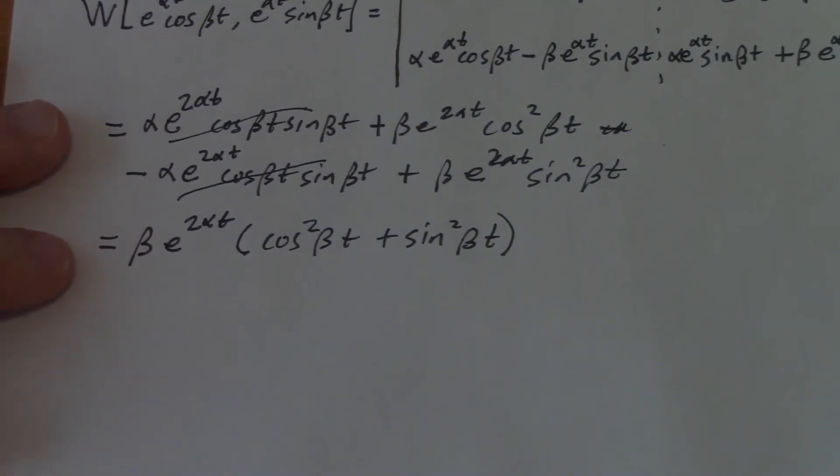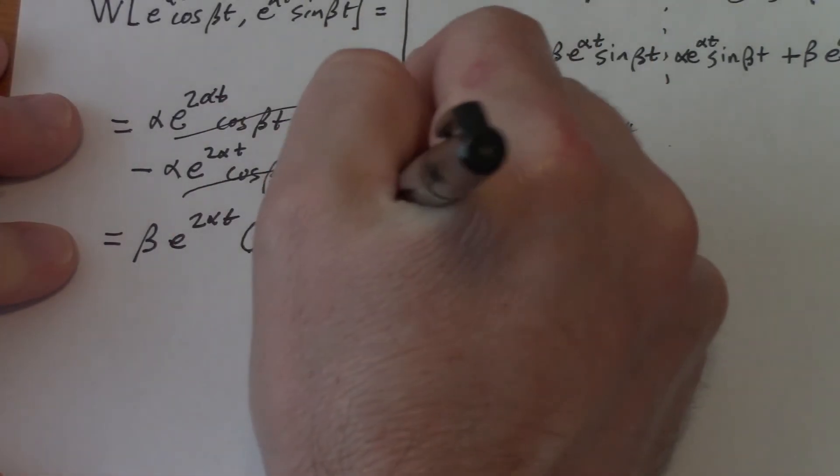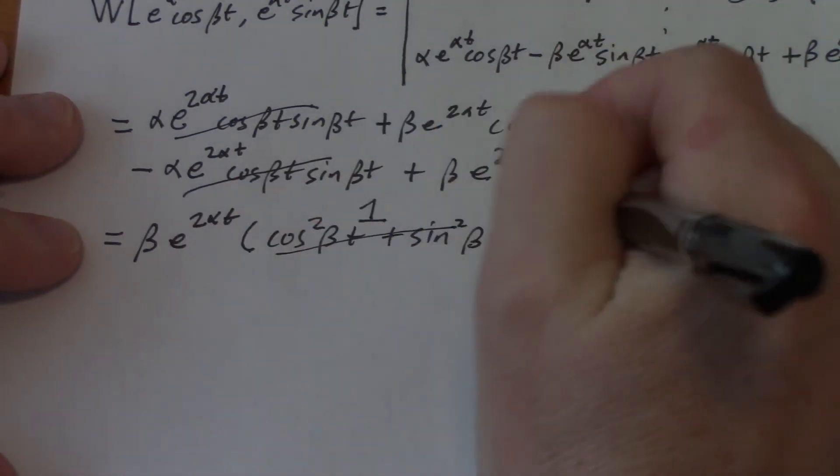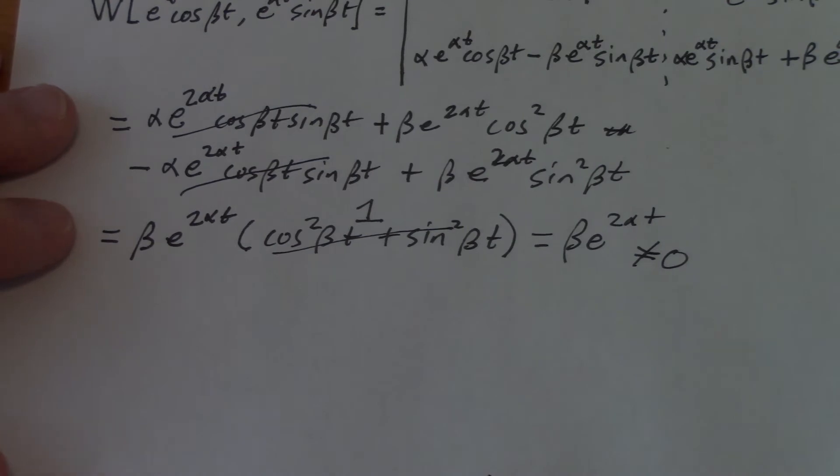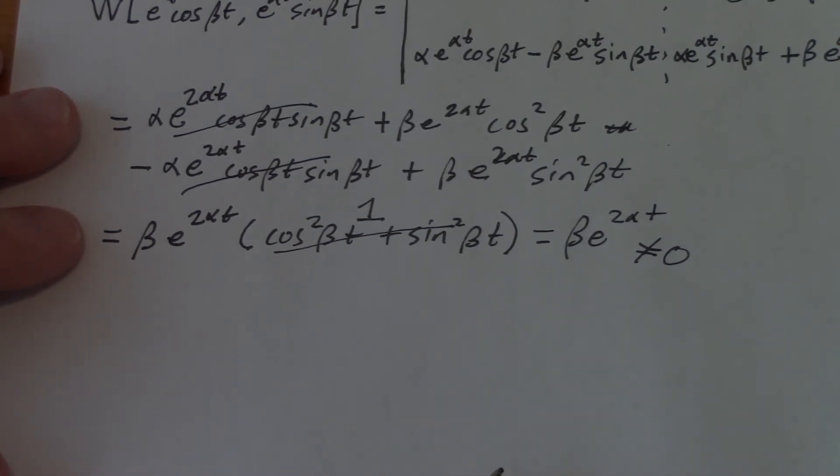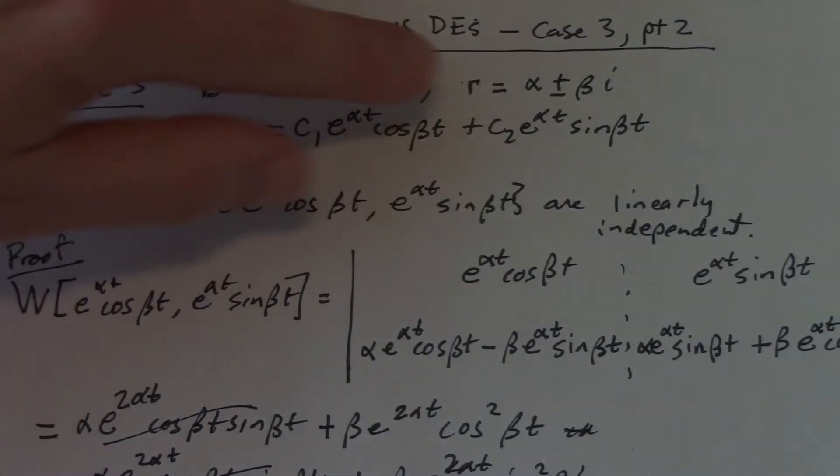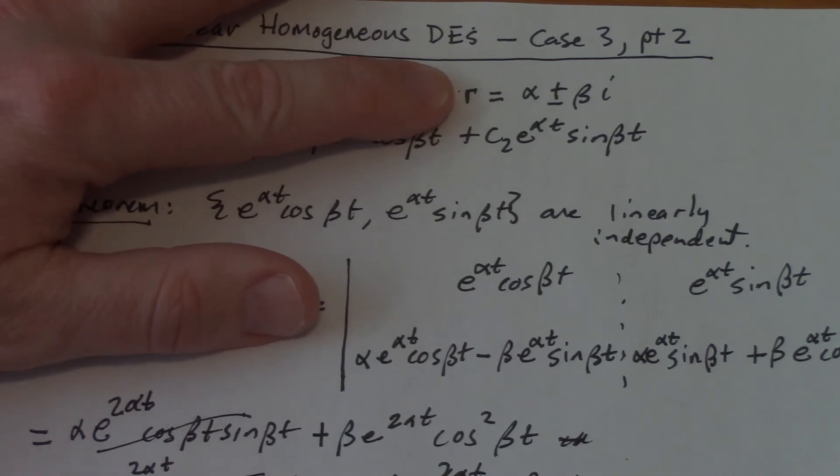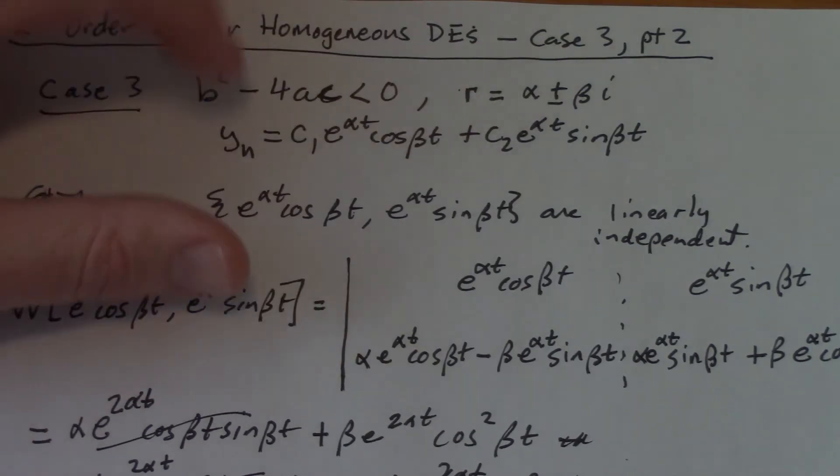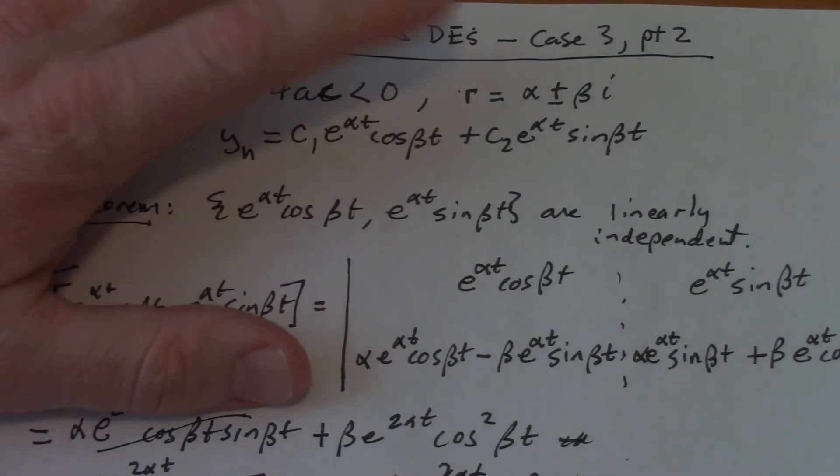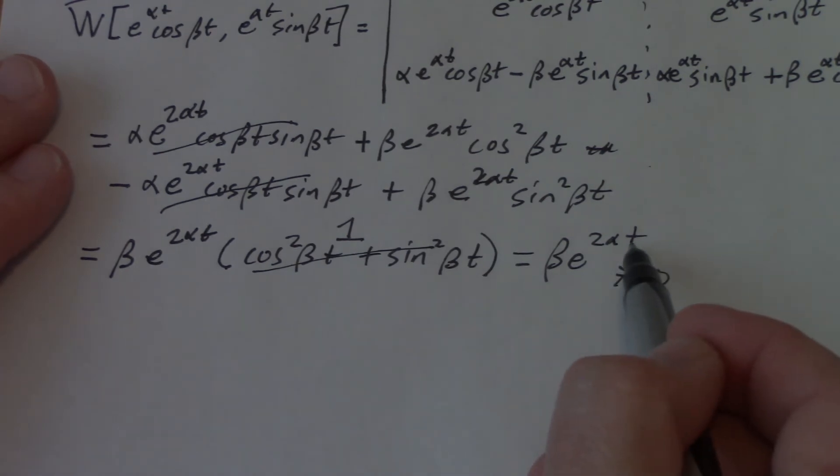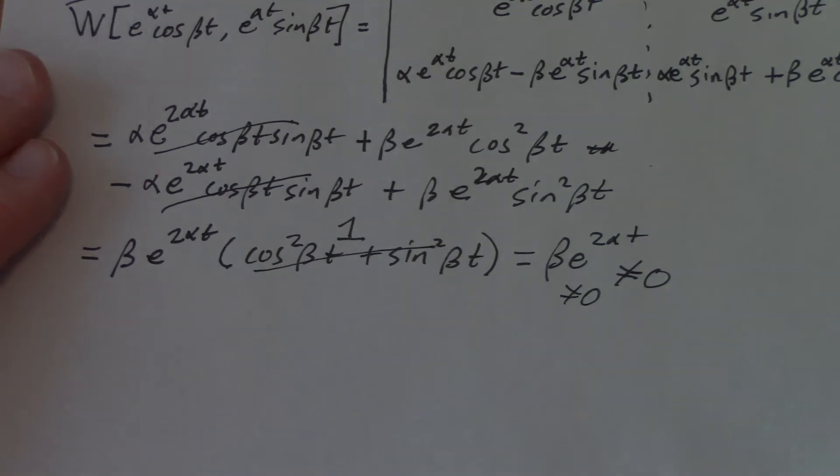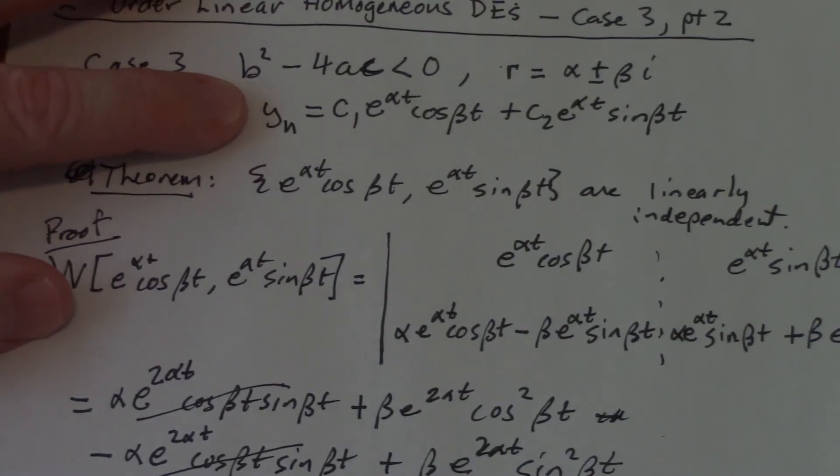Remember, the goal with looking at the Wronskian is to show that it can't be equal to 0. All that is equal to 1, that's the Pythagorean identity. That gives me beta e to the 2 alpha t. Well, we know exponential functions can't be 0. And here's the thing: if we're assuming that b squared minus 4ac is less than 0, beta cannot be 0. Beta has to be some kind of number that makes it so that we have complex roots. E to the 2 alpha t can't be equal to 0, and beta also can't be equal to 0. So that means those guys are linearly independent.